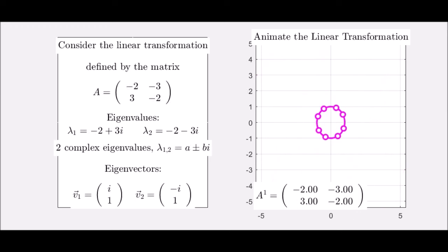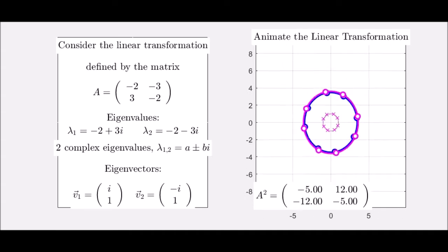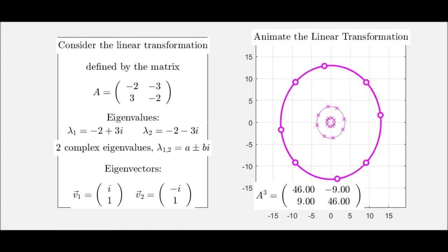So complex eigenvalues, in this case, we have negative two plus or minus three I. In this case, it's the magnitude of those eigenvalues that will tell you whether or not the matrix is convergent.